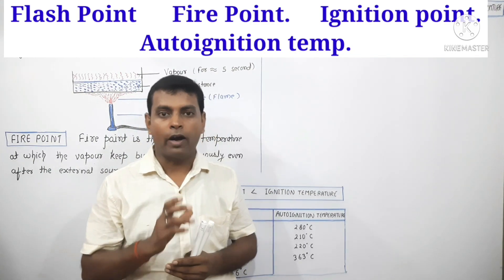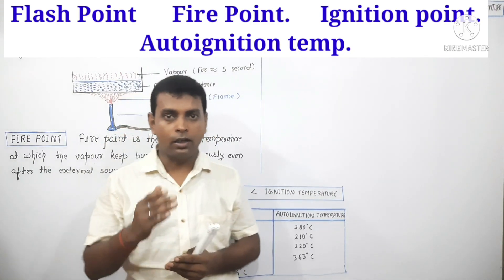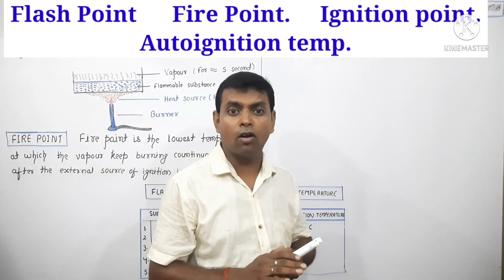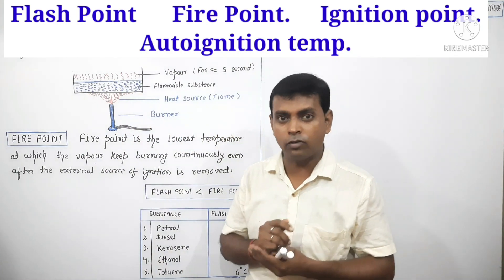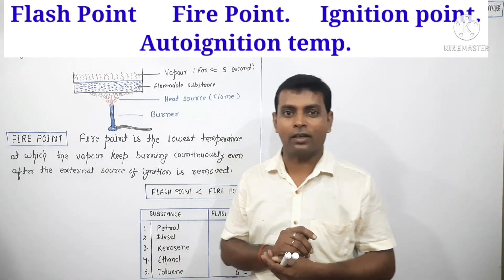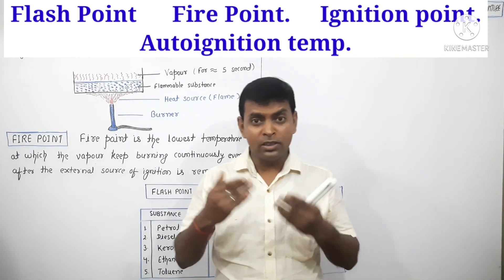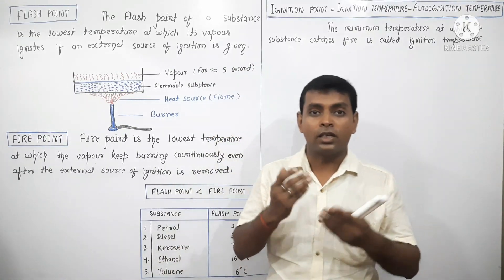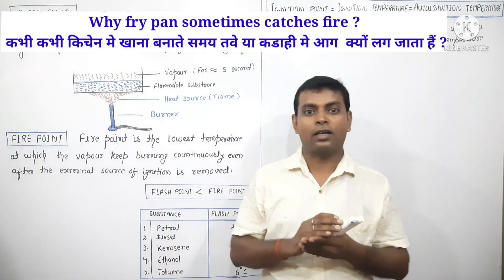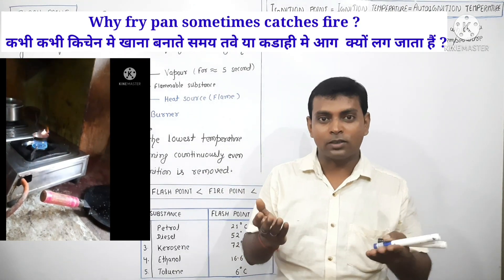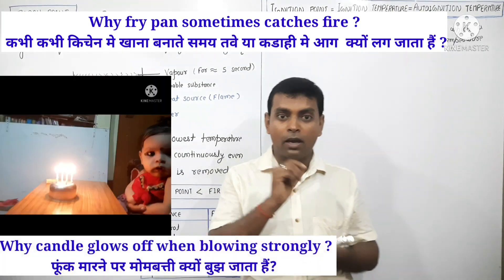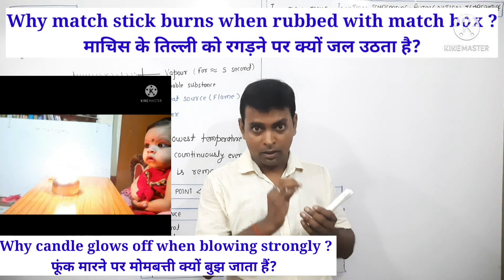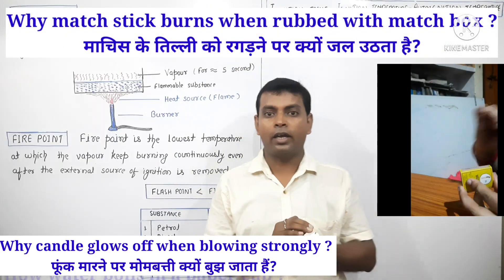Wo important terms hain: flash point, fire point, ignition point, ignition temperature. Students generally ignition temperature aur auto ignition temperature mein bahut confused rehte hain, hum log is confusion ko zaroor dur kar lenge. Kuch important questions bhi aane waale hain jo kaafi interesting honge — jaise kitchen mein khana banate samay kabhi kabhi fry pan mein achanak aag lag jaati hai, woh kaisa hota hai? Candle kiyo bujh jaata hai? Matchis ki tili ko ragaarne pe woh kyu jal uthti hai?